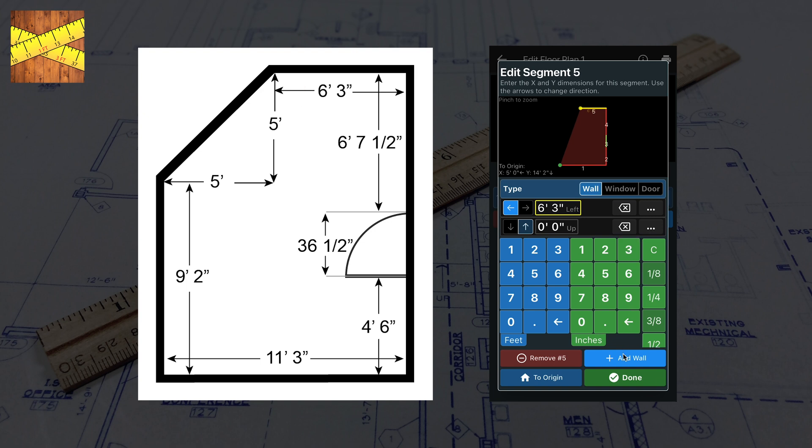For the diagonal wall, enter your dimension to the left. Then tap the down arrow and enter your dimension down.